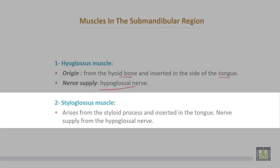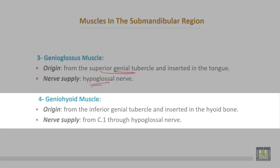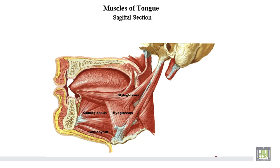The second muscle is the styloglossus muscle, which arises from the styloid process and is inserted into the tongue. Its nerve supply is also from the hypoglossal nerve. The third muscle is the genioglossus muscle, which takes its origin from the superior genial tubercle of the mandible and is inserted into the tongue, with nerve supply from the hypoglossal nerve. The fourth muscle is the geniohyoid muscle, which takes its origin from the inferior genial tubercle of the mandible and is inserted into the hyoid bone, with nerve supply from cervical one through the hypoglossal nerve.